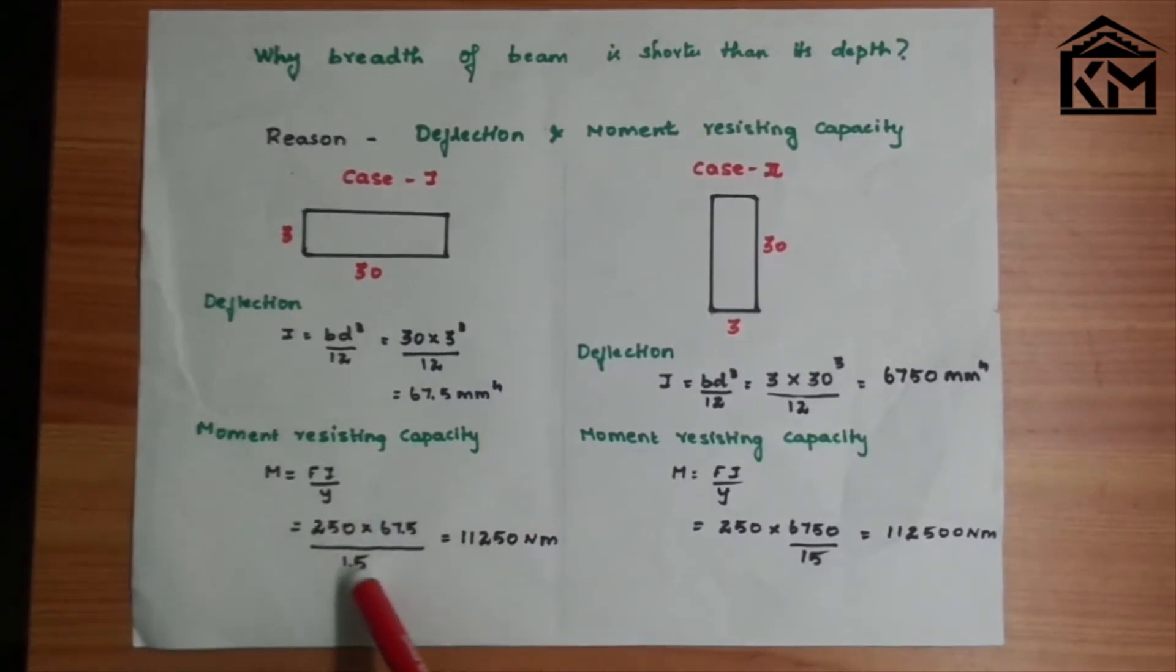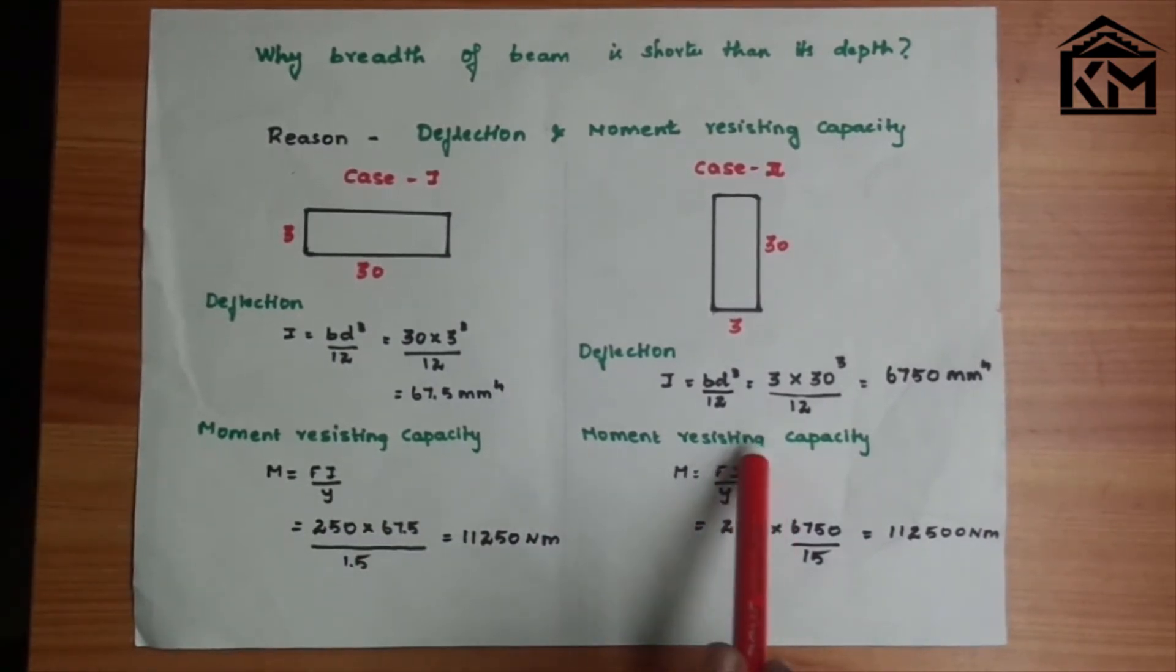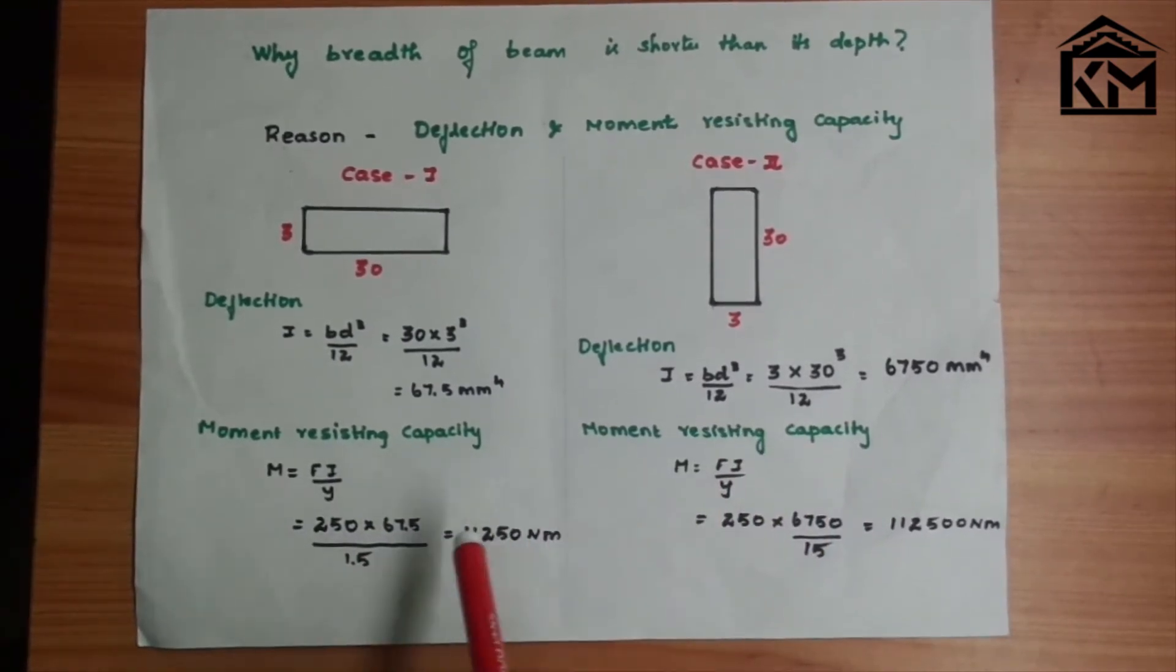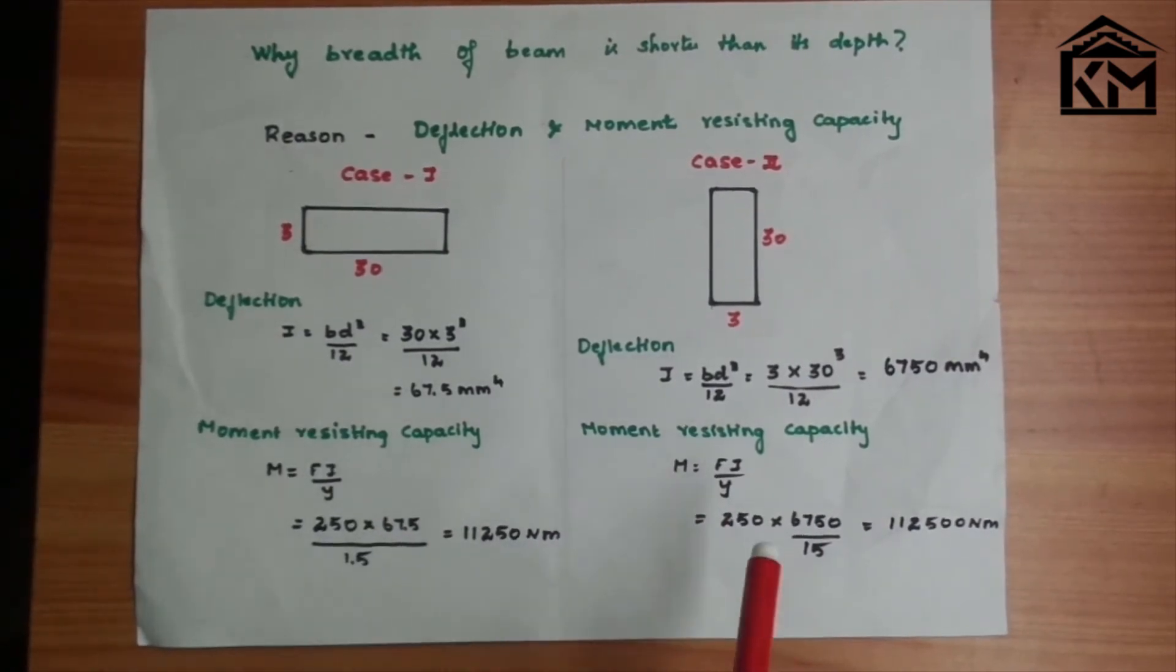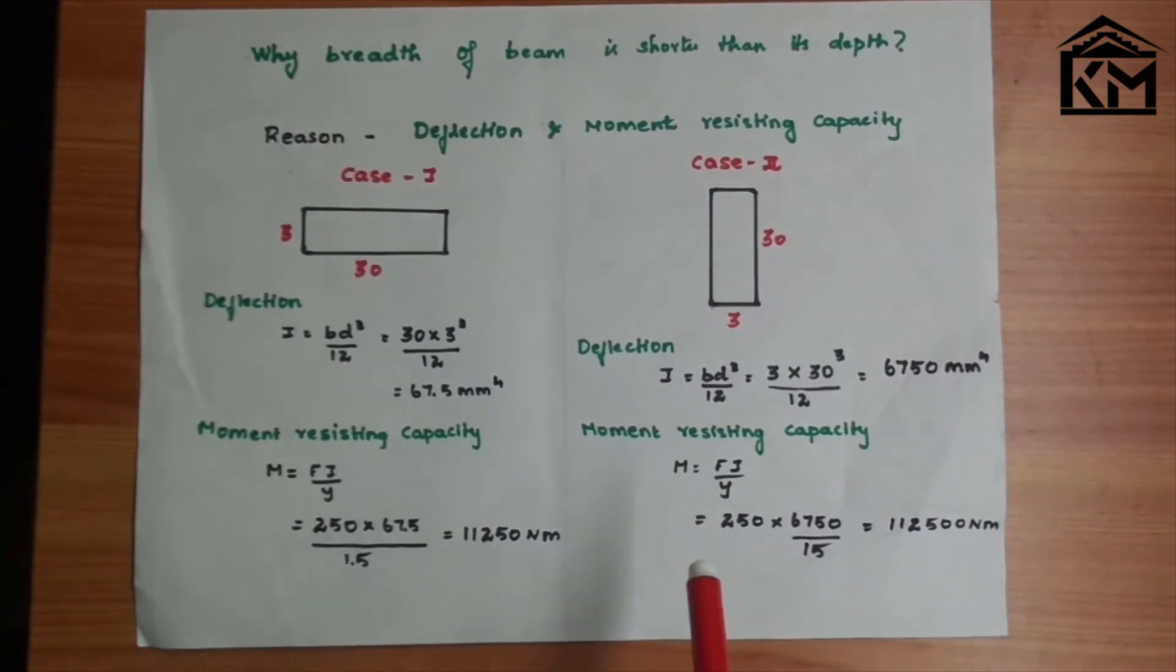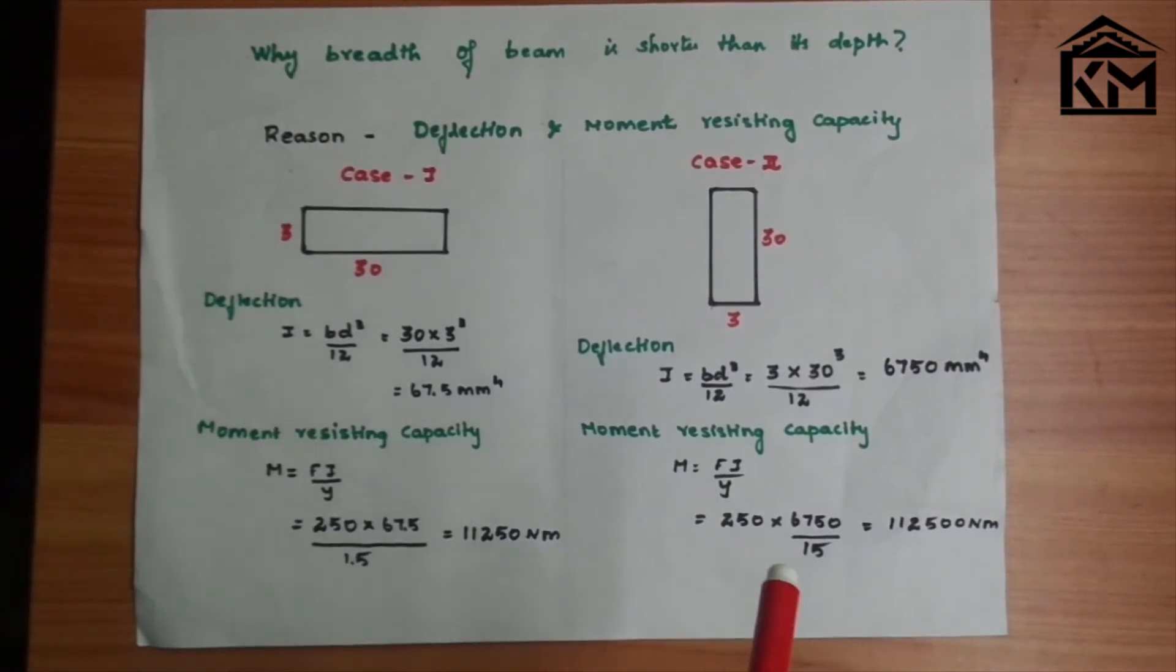We can derive for case 1 and case 2. If we compare these two, case 2 has 10 times the moment resisting capacity. So we can see depth matters for both deflection and moment resisting capacity.